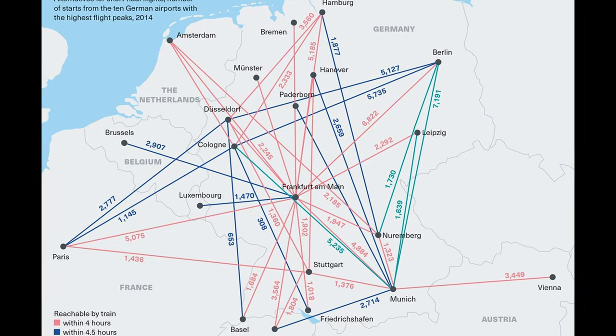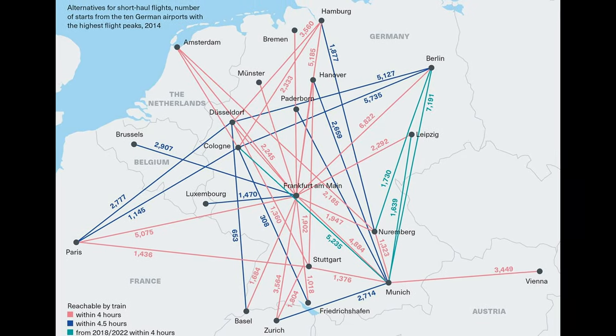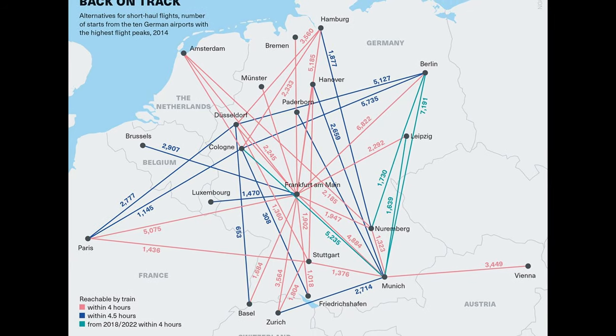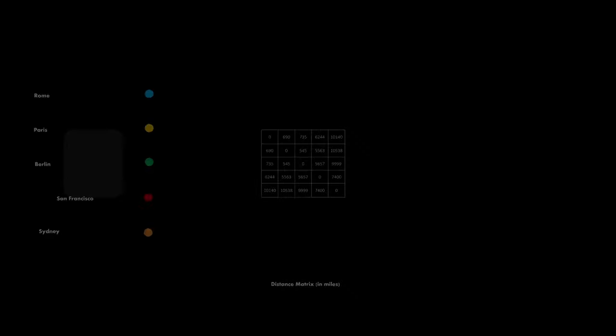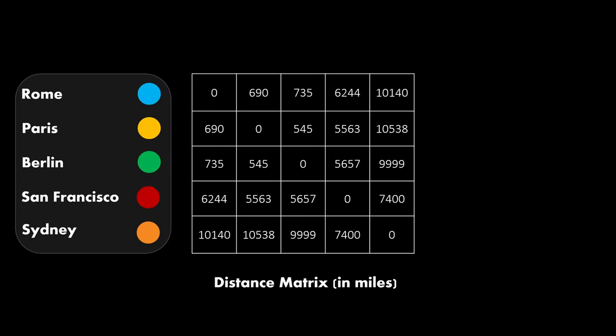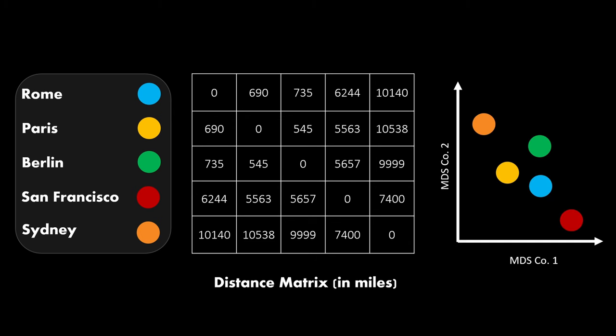Now that we have a rough idea what MDS is all about, let's take a look at the mathematical framework. For this, we will use the standard example for all MDS tutorials, flight distance between cities. This is well suited because it allows us to intuitively define the relationships as distances or dissimilarities. Here we have five cities and their distance in miles in a symmetric distance matrix. Given such a distance matrix, the task is to find the optimal distance-preserving low-dimensional map.